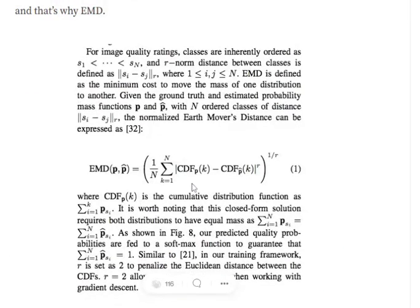The formula for Earth Mover's Distance is EMD(p, p̂), where p is the original distribution and p̂ is the calculated probability distribution that we get from the predictions from the model. It equals (1/N) times the summation from k=1 to N, where N is the total number of classes, so in our case it is 10, of |CDF_p(k) - CDF_p̂(k)|^(1/r). CDF is the cumulative distribution function.